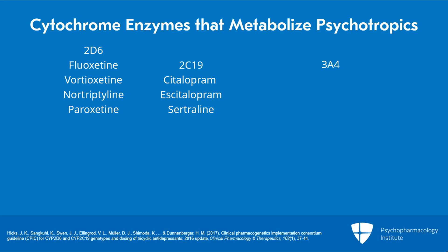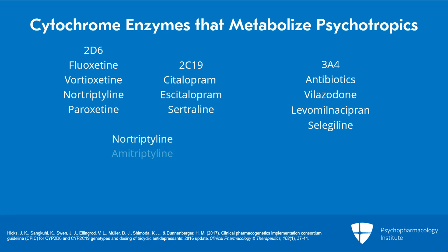3A4 is the largest enzyme in the P450 family and processes a lot of non-psychiatry medicines, such as antibiotics. For psychiatry medicines, vilazodone, levomilnacipran, and selegiline are some that are processed by 3A4. Most tricyclic antidepressants such as nortriptyline, amitriptyline, desipramine, imipramine, and clomipramine are metabolized mostly by 2D6 and some 2C19.